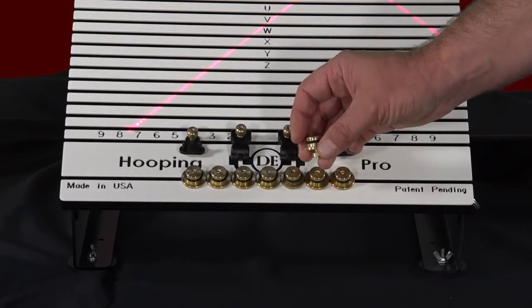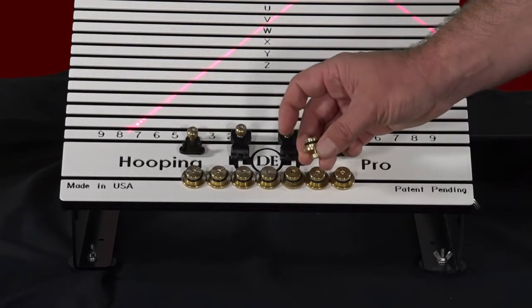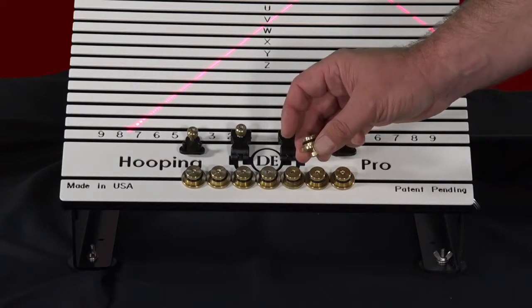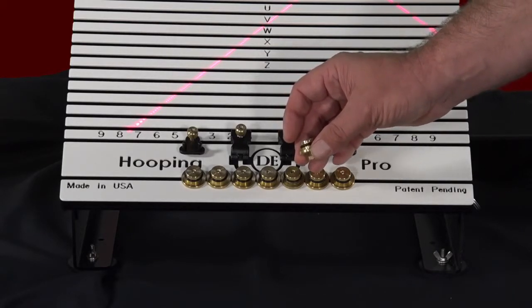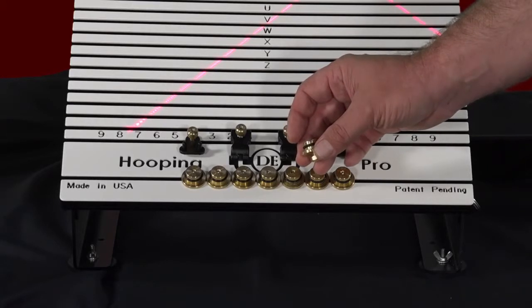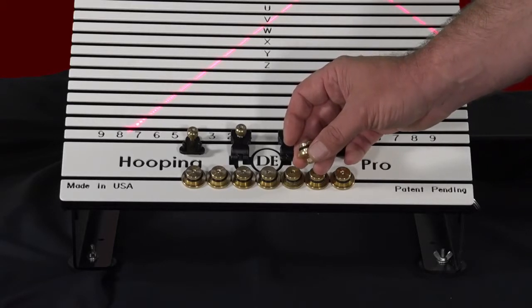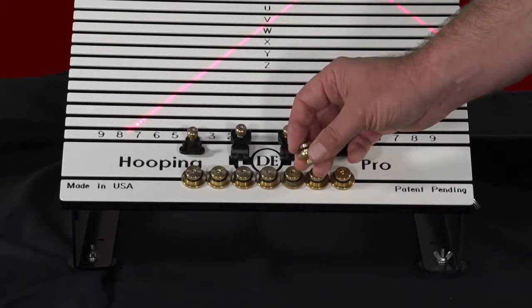You'll also notice that it has a black o-ring. This is to create friction no matter what style of hoop that you are using, whether it be a single needle machine hoop, a multi-needle machine hoop that can be plastic or wood, or your magnetic hoops that are used in the industry.